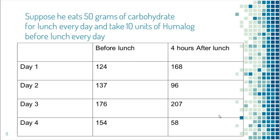In this example, we continue to assume he eats 50 grams of carb for lunch every day and takes 10 units of Humalog before lunch every day. Blood sugar went up after lunch the first day, but went down the second day, then up again on the third day, but down again on the fourth day — no consistent pattern. In this example, he should not change the dose of Humalog. However, he should think about why blood sugar sometimes went up and sometimes went down despite the same amount of carb and same dose of insulin. Was it because he did not actually eat 50 grams of carb every day? Maybe he ate 40 grams one day and 60 grams the next, but erroneously believed he was eating 50 grams every day. If that is the case, he needs to make a more accurate estimation of carbs.